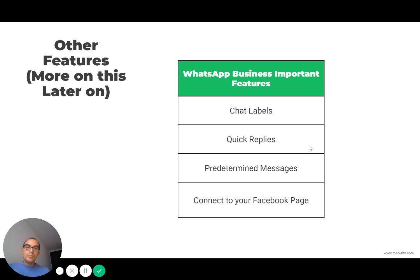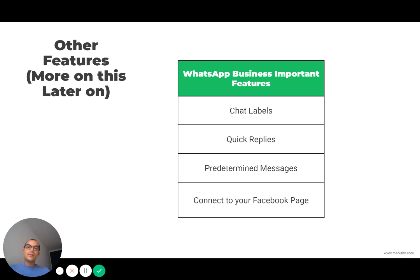Quick replies help you automate conversations with customers — with some limitations. And the same thing with predetermined messages: you can set up short keywords, so if I type 'thanks' for example, that's going to send a specific message. Or if I type a specific word, it sends an automatic message that I don't have to retype or copy and paste. So it's a quick way to interact better with your customers using saved messages.